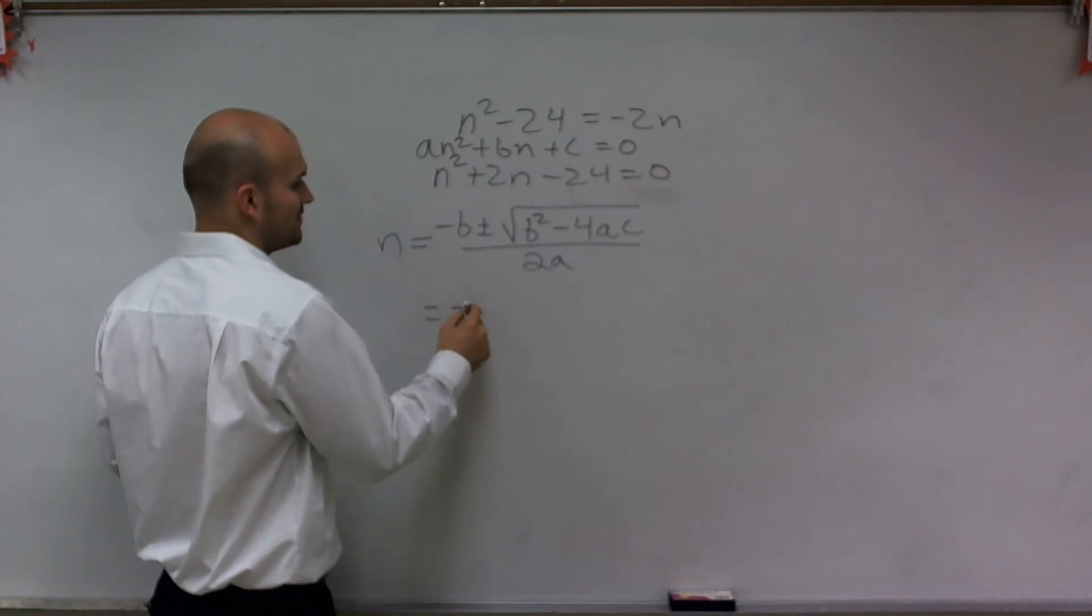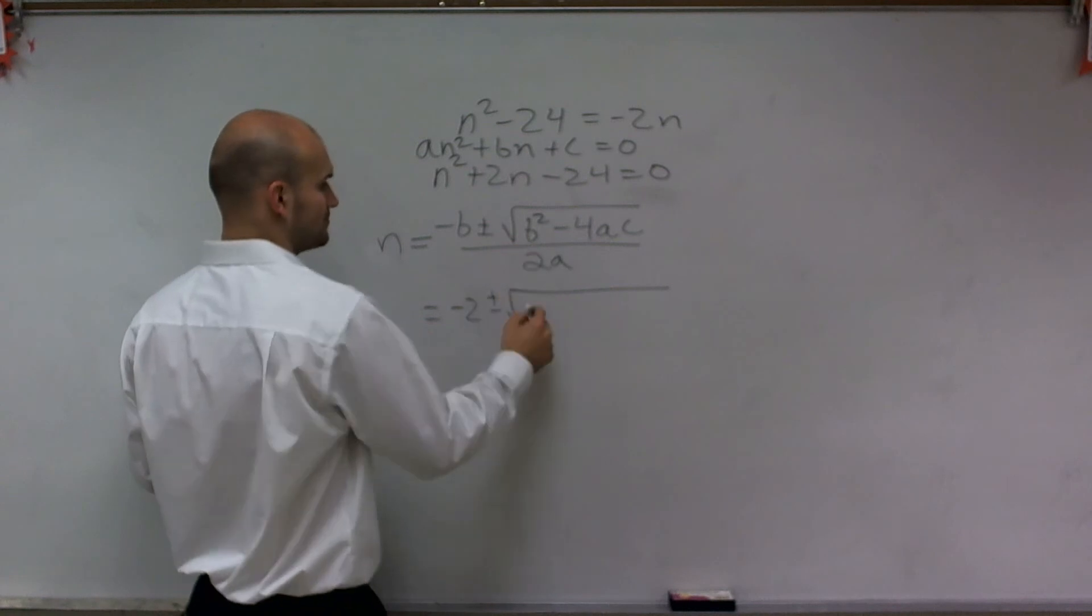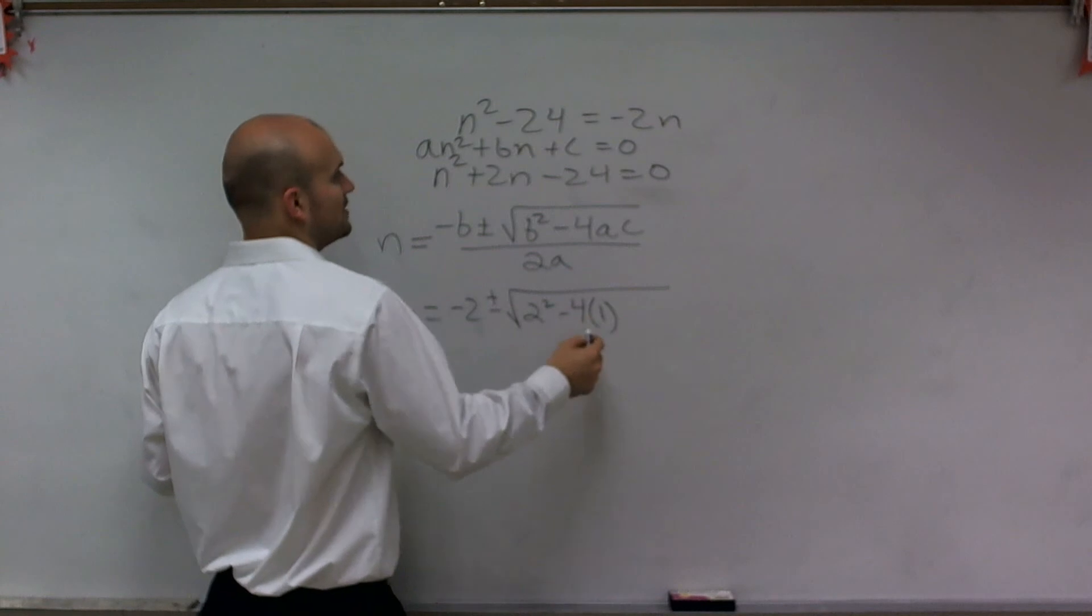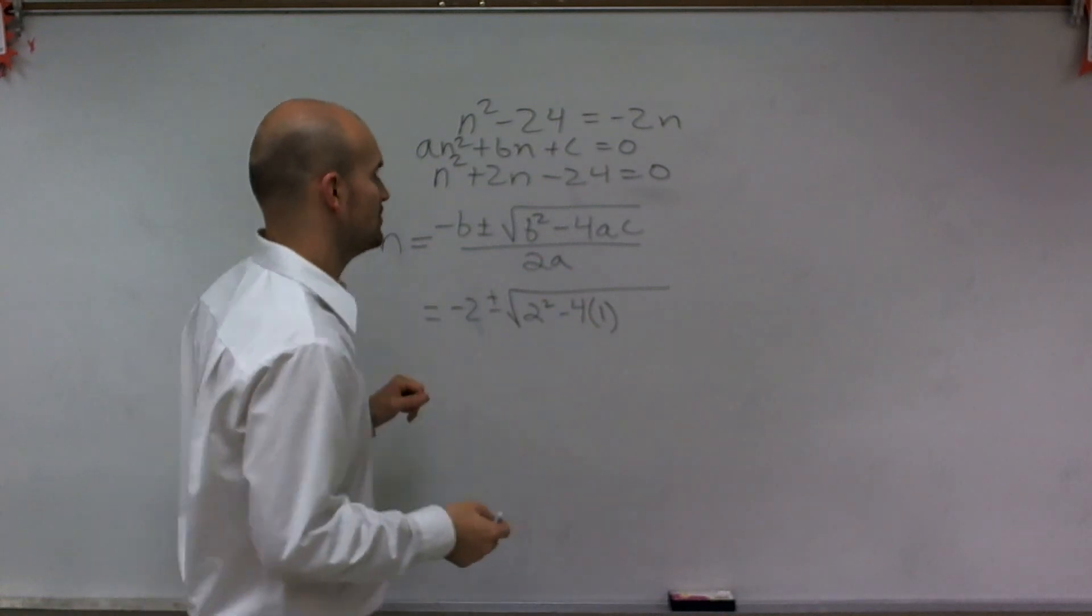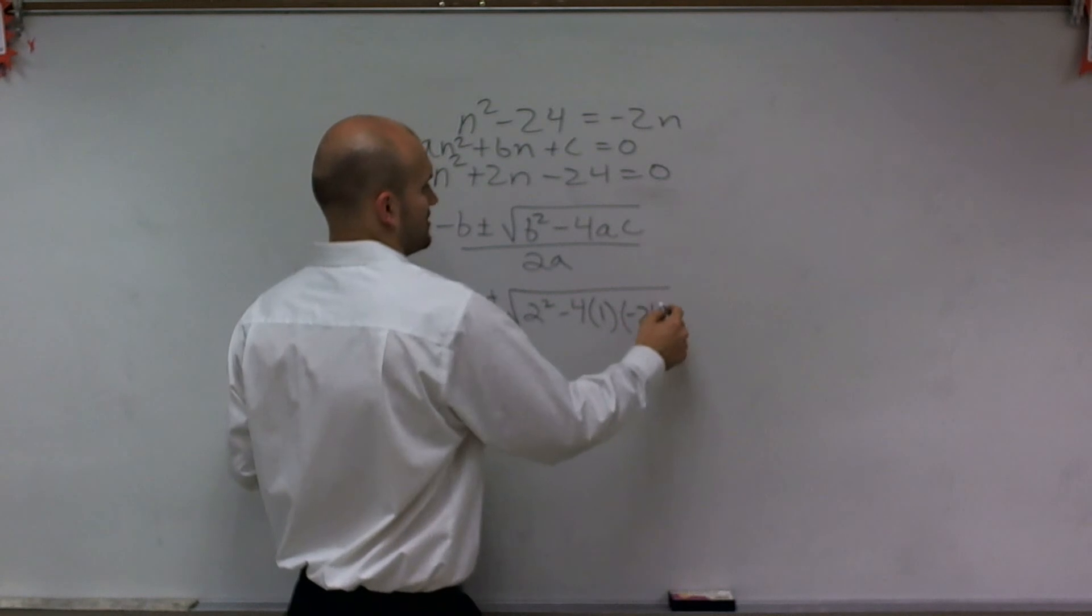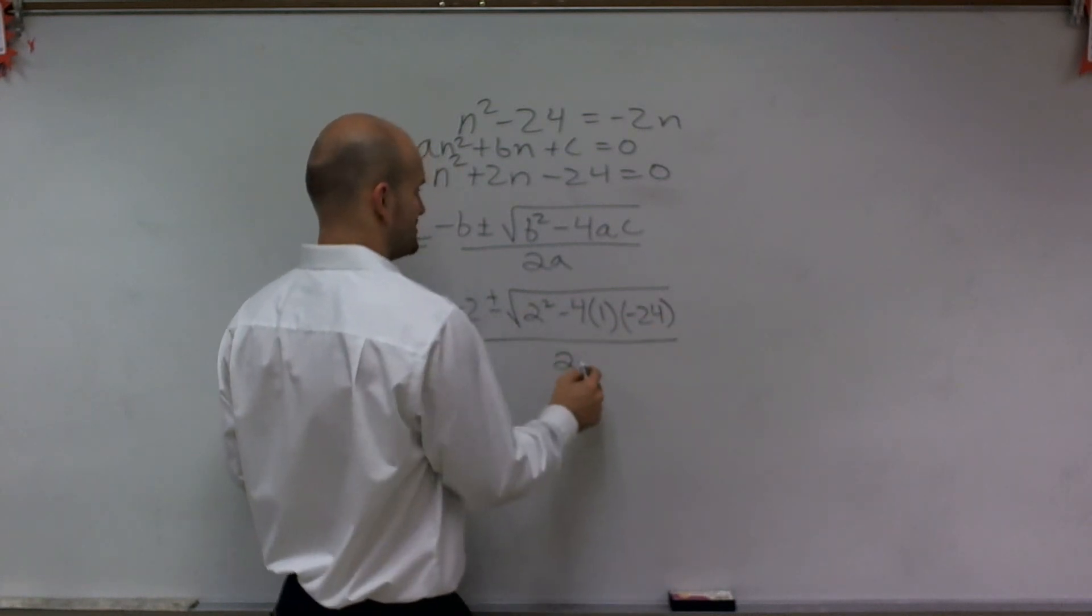I get -2 ± √(2² - 4 × a, in this case which is 1, times c, which is -24) all over 2 times a, which is 1.